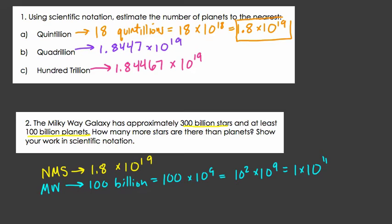Look at that. No Man's Sky has 10 to the 19th planets. Amazing. And the Milky Way has 10 to the 11th planets.